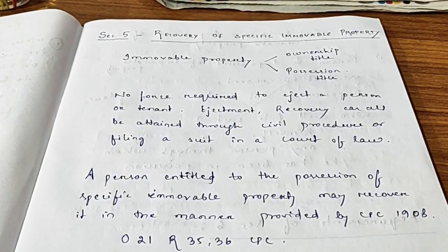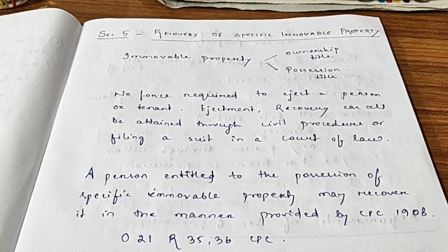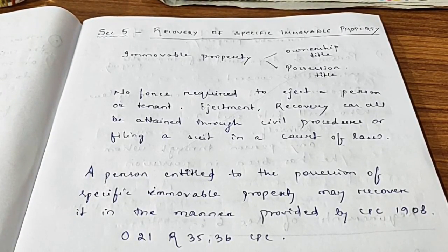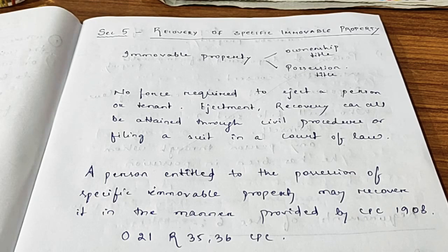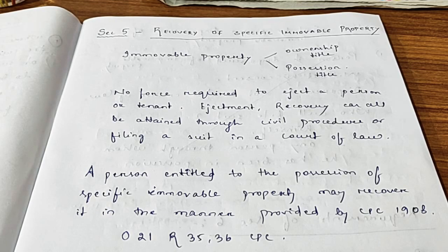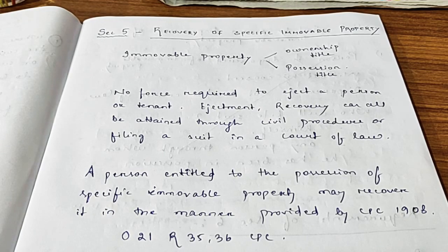Hello everyone. Today we will deal with Section 5 and Section 6 of the Specific Relief Act, which deals with recovery of possession of specific immovable property. When it comes to immovable property, we can recover it in two ways: we can prove the ownership title, or we can prove the possessory title.